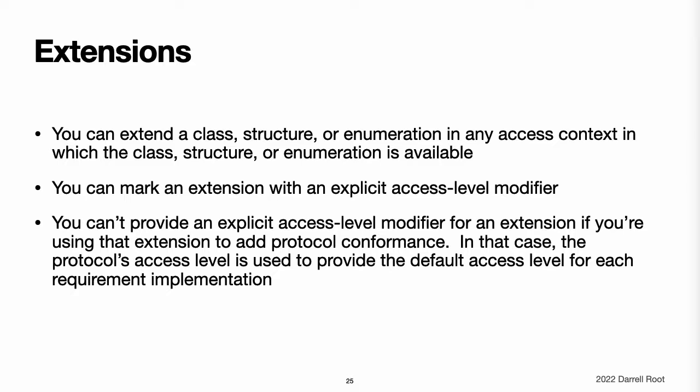Extensions. You can extend a class, structure, or enumeration in any access context in which the class, structure, or enumeration is available. Any type members added in an extension have the same default access level as type members declared in the original type being extended. If you extend a public or internal type, any new type members you add have a default access level of internal. If you extend a file private type, any new type members you add have a default access level of file private. If you extend a private type, any new type members you add have a default access level of private. Alternatively, you can mark an extension with an explicit access level modifier, for example private, to set a new default access level for all members defined within the extension. This new default can still be overridden within the extension for individual type members. You cannot provide an explicit access level modifier for an extension if you are using that extension to add protocol conformance. Instead, the protocol's own access level is used to provide the default access level for each protocol requirement implementation within the extension.